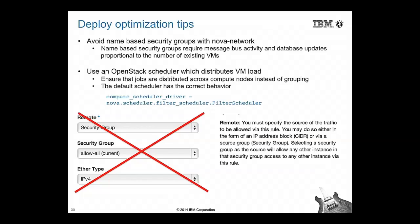Instead of using name-based security groups for the source, it's much better to use IP-based security rules. Regarding scheduling, you want to use an OpenStack scheduler that evenly distributes VM load. If your scheduler fills up one compute node before moving to the next, you might deploy 20 VMs on one node and 20 on another, leaving many compute nodes empty. The default scheduler has the capability to distribute the load, so as long as you don't customize to a co-locating scheduler, you'll be fine.